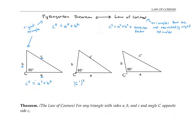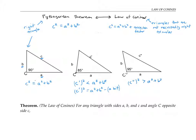Therefore, c prime squared should be less than a squared plus b squared, or in other words, c prime squared should equal a squared plus b squared minus a little bit. In this third triangle, the angle opposite c double prime is a little bigger than 90 degrees, so this side length c double prime should be a little bit longer than the side length c in the right triangle with the same size legs. So c double prime squared is equal to a squared plus b squared plus a little bit.